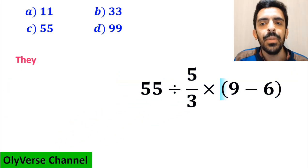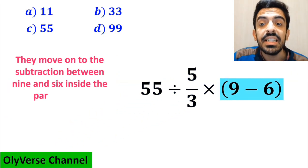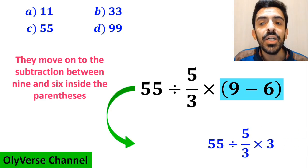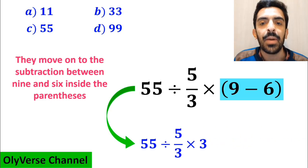In the next step, they move on to the subtraction between 9 and 6 inside the parenthesis and simplify this expression to 55 divided by 5 over 3 times 3.